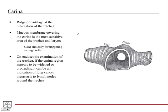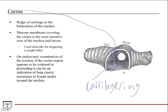The carina is a ridge of cartilage at the bifurcation of the trachea. There's a mucous membrane that covers the carina, and it's actually the most sensitive area of the trachea and larynx, so it can be used clinically to trigger the cough reflex. On endoscopic examination — where a long flexible camera is advanced down through the mouth into the trachea to the carina — if the carina appears widened or protruding, it can be an indication of lung cancer. There are lymph nodes just deep to the carina at the split of the trachea, and a widened carina may indicate lung cancer that has metastasized to these lymph nodes.